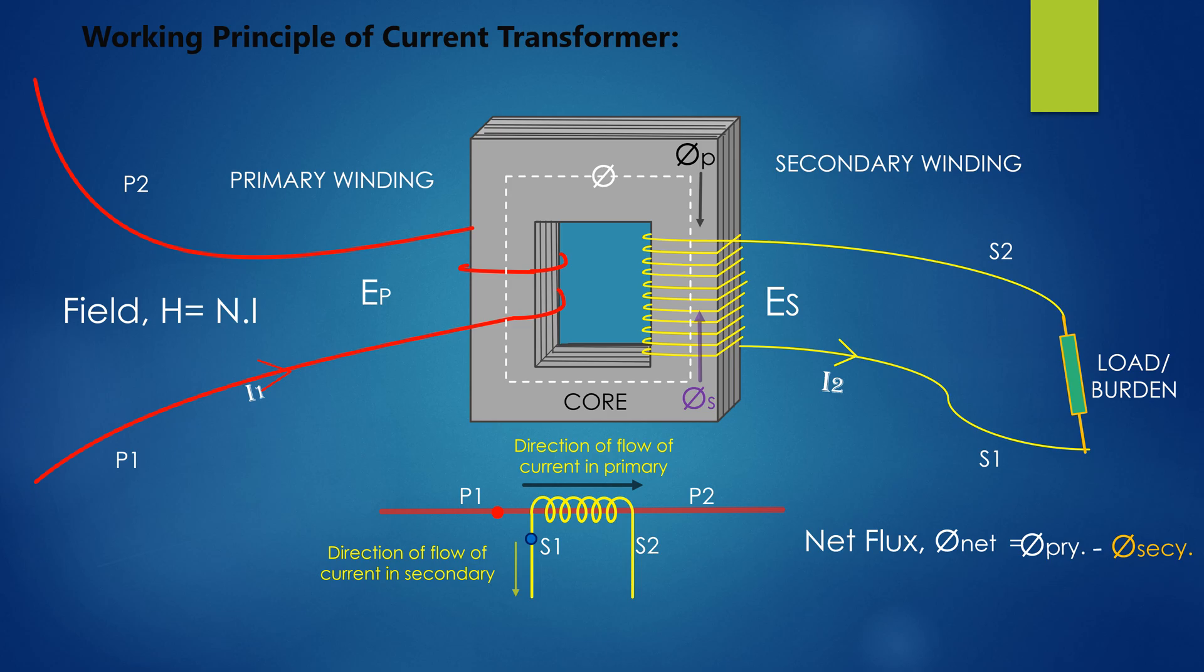The flux in the core remains within the rated current rating of the core when the CT is connected to the specified burden. Then, if the CT is kept open-circuited, no current will flow in the secondary, that is I2, the secondary current is equal to zero. And consequently, no secondary flux, the opposing flux, will be set up in the core, that is phi s is equal to zero. Therefore, net flux phi net is equal to primary flux phi primary.